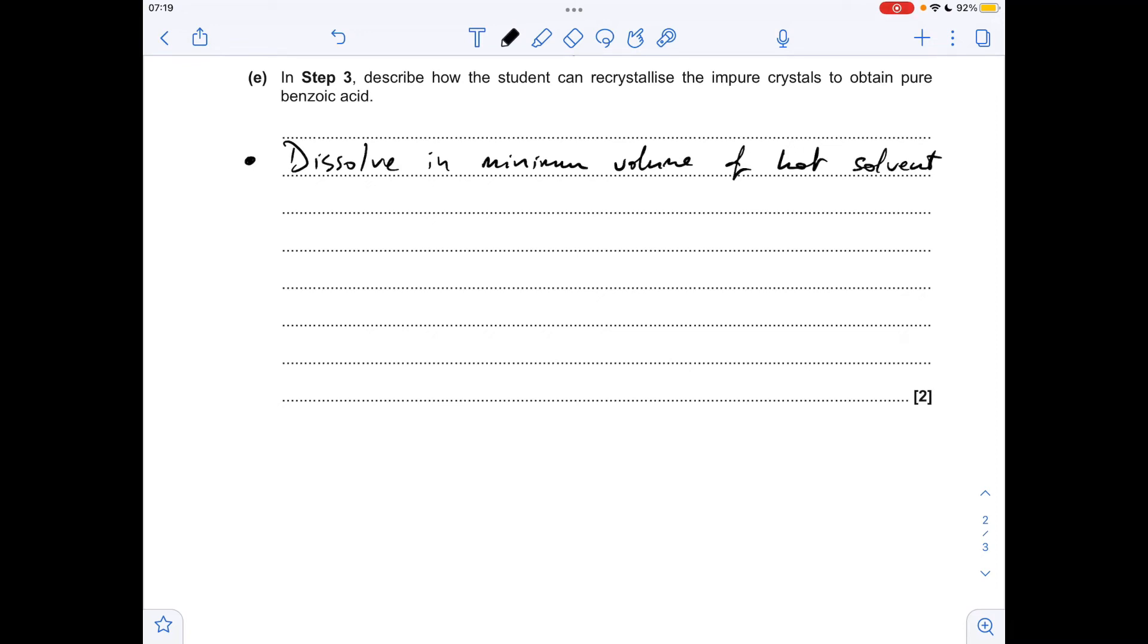Now for the next mark, there's four separate things you've got to say. First one is you cool the mixture. The extra information, if the question was worth more than two marks, you would say cool and scratch the side of the beaker with a glass rod, and that'll help generate the crystals.